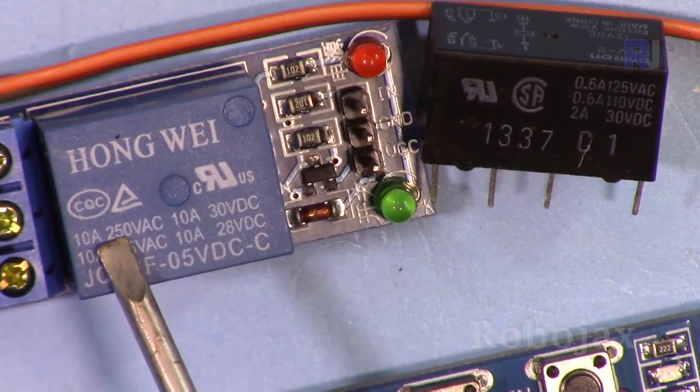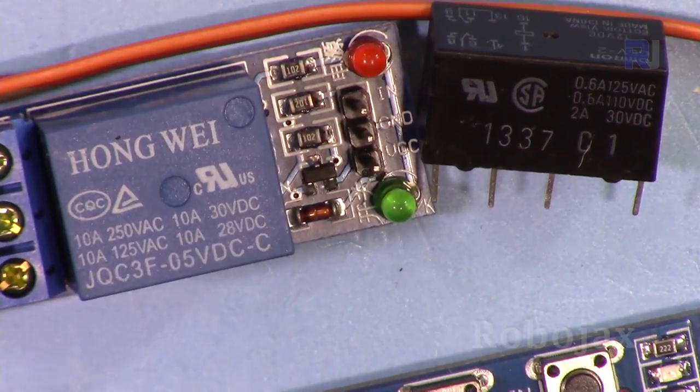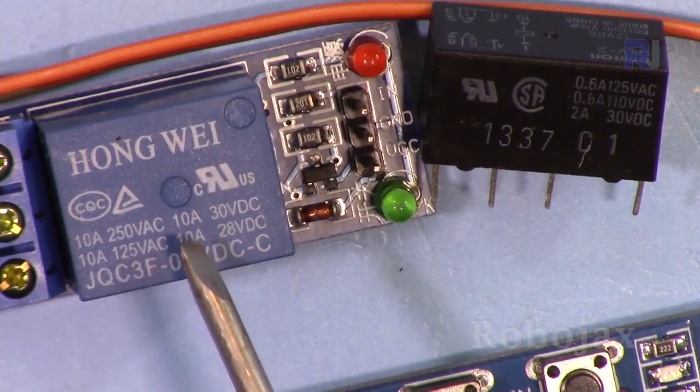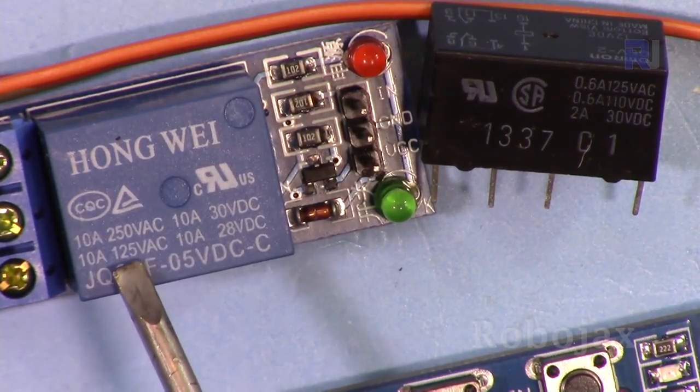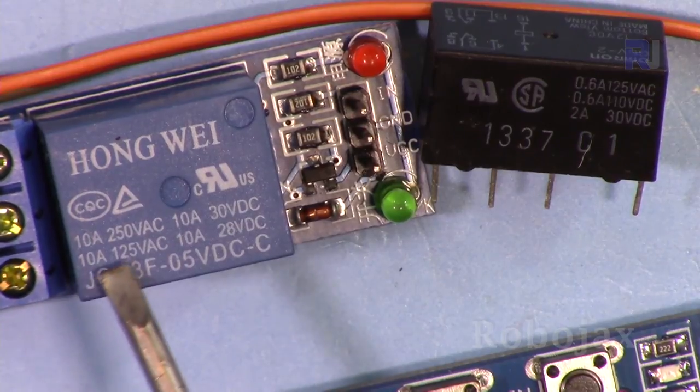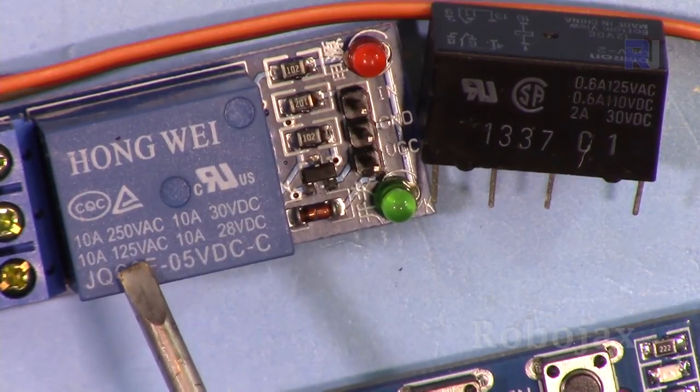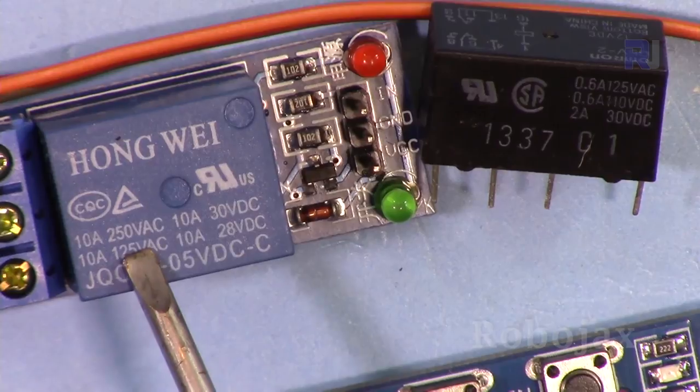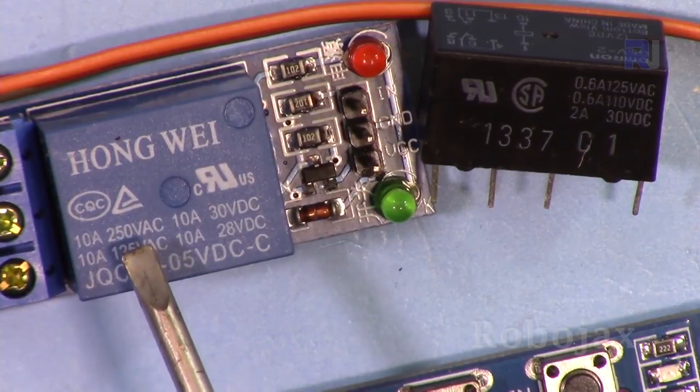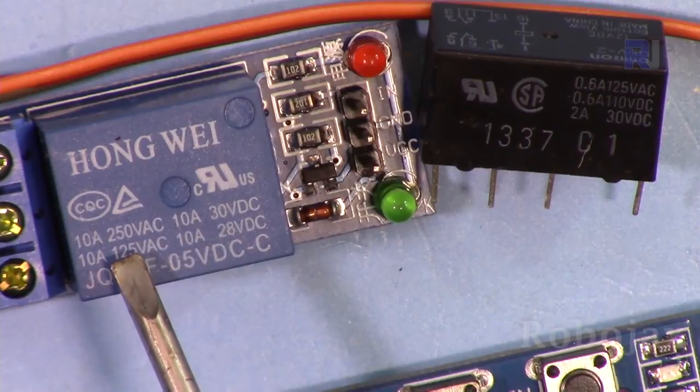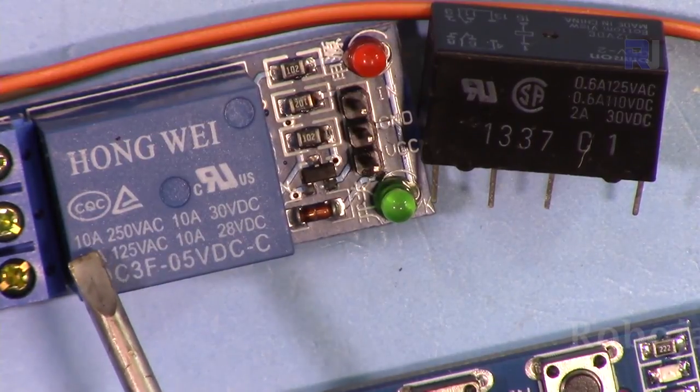This can handle 10 amperes at 28 volts and 10 amperes at all voltages: 120, 250, and 30 volts. To understand how much this can handle: in North America, the voltage is 120 volts times 10 amperes, which is 1200 watts or 1.2 kilowatts. If you're in Asia and Europe, the voltage is 220 or 240 volts. For 220 times 10, that's 2200 watts or 2.2 kilowatts.